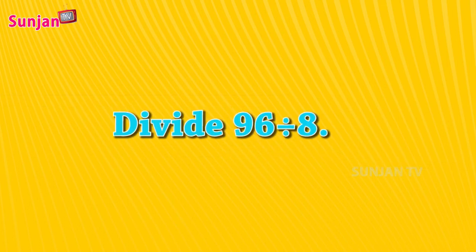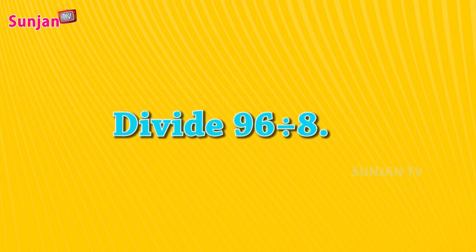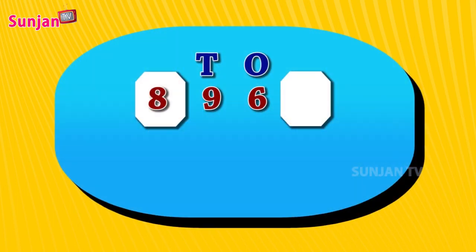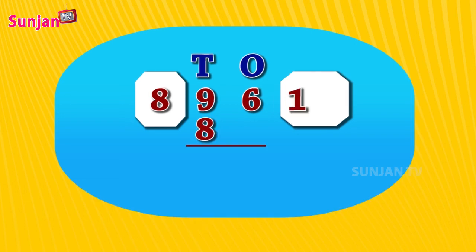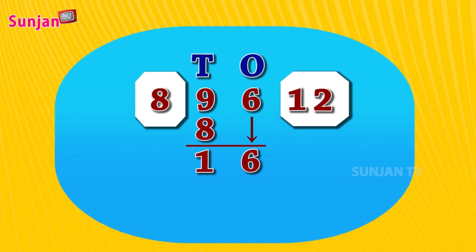Example: Divide 96 by 8. 8 ones are 8. 9 minus 8 is 1. Now bring down the 6. 8 twos are 16. 16 minus 16 is 0. The remainder is 0.